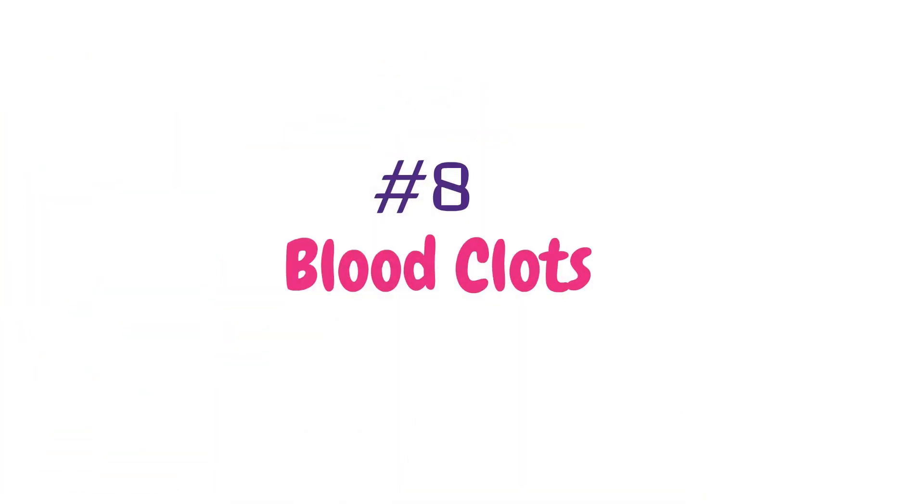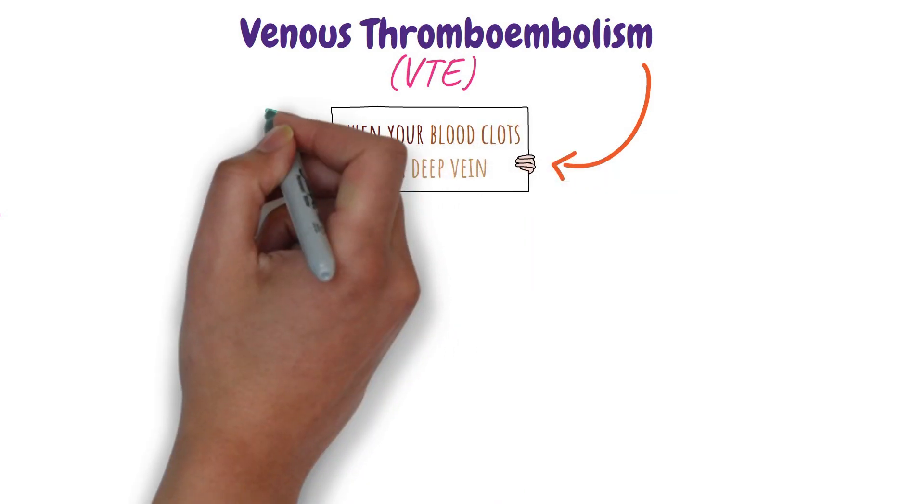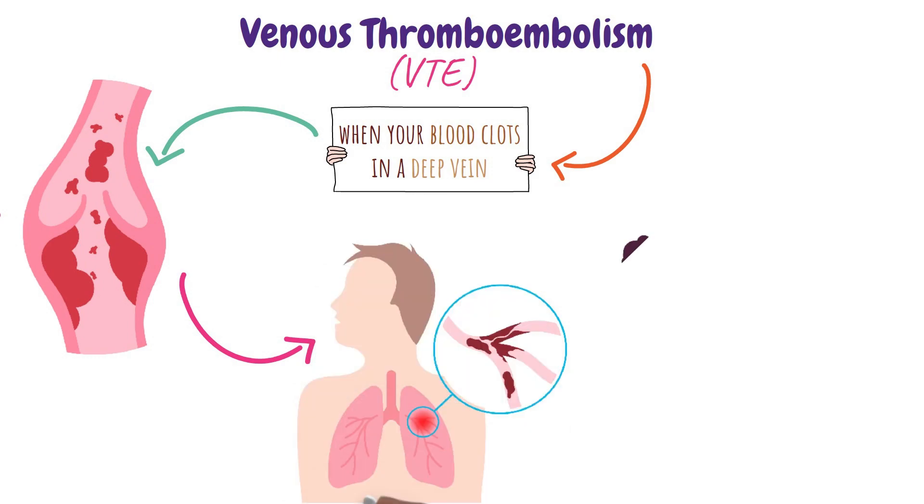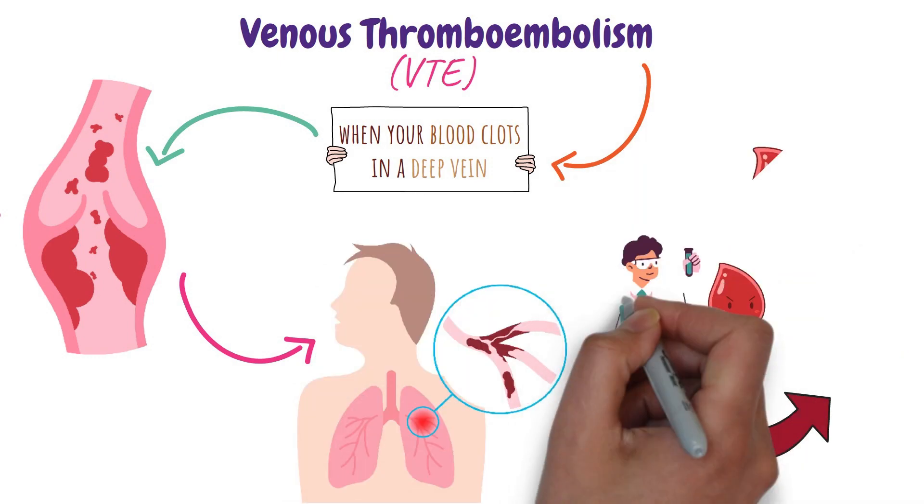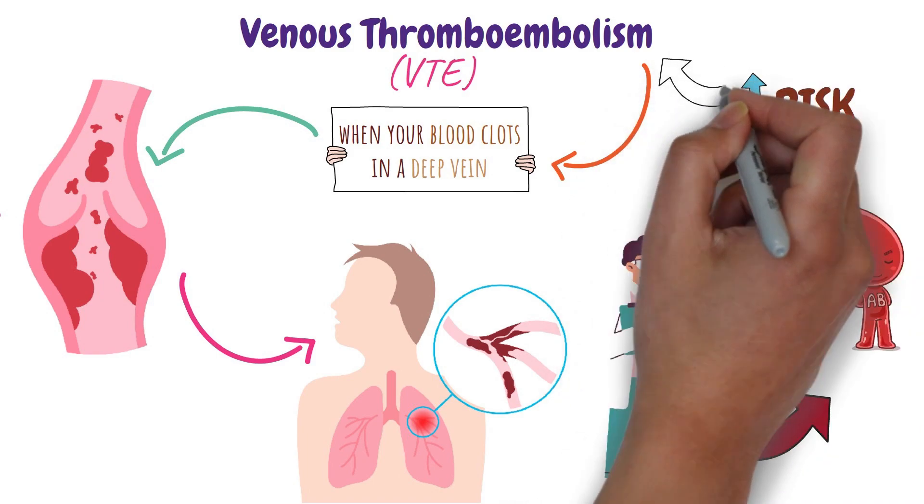Number eight, blood clots. Venous thromboembolism is when your blood clots in a deep vein, like the ones in your legs. These clots sometimes move to your lungs. Research shows that people with type A, B, or AB blood are at a higher risk of venous thromboembolism.